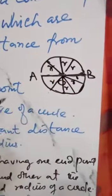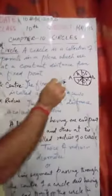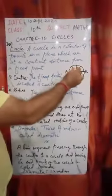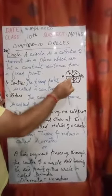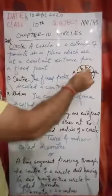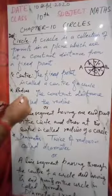So circle ki definition: a circle is a collection of points, all those points in a plane which are equidistant from the center of the circle. That fixed point and the constant distances that is equidistant from the center, they are called radius.